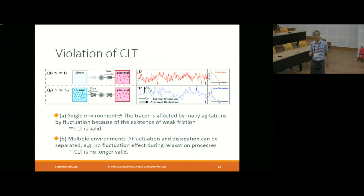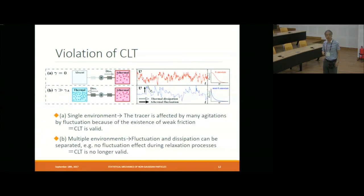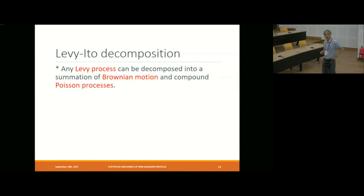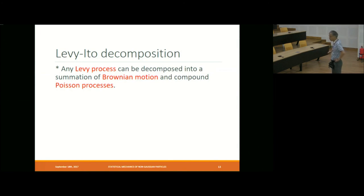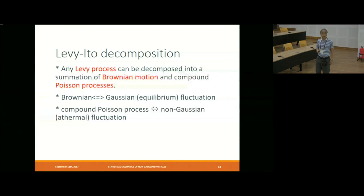There is a mathematical statement — the Lévy-Itô decomposition for stochastic systems. Any Lévy process can be decomposed into the summation of Brownian motion and a compound Poisson process, which is consistent with the previous picture. The Brownian part means Gaussian equilibrium fluctuation, and the compound Poisson process is nothing but non-Gaussian thermal fluctuation. So if we are interested in a Lévy process, we need to have such a combination of Gaussian and non-Gaussian, or Brownian and Poissonian. That is a mathematical statement.